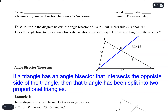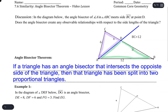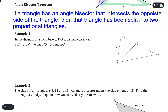This triangle here would be proportional, or similar, to the other triangle. Those two triangles are going to be similar to each other. If they're similar, that means their angles are congruent, their sides are proportional, and we can go through all the characteristics of similar triangles.